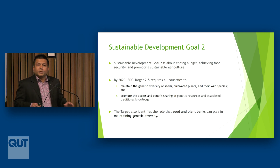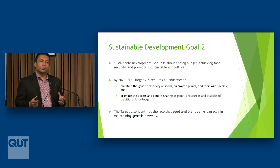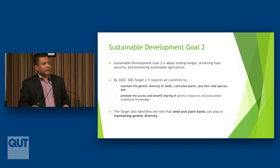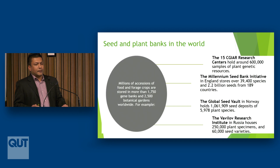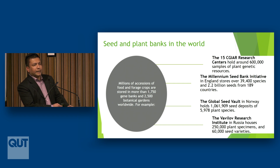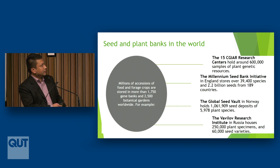Today's topic is community seed banks, but before I talk about community seed banks, I would like to give a global overview about seed and plant banks particularly in the context of Sustainable Development Goal 2 and Target 2.5. Then I will discuss how community seed banks have emerged across many countries, and finally I will focus on the case of Nepal, where community seed banks have grown from one in 1992 to more than 100 now, examining their governance and insights for intellectual property and sustainable development goal discourse.